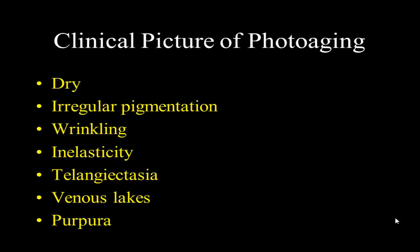Photoaging has a clinical correlate. The skin tends to dry out. They have irregular pigmentation, wrinkling, inelasticity, broken blood vessels, telangiectasias, venous lakes, and purpura. So they talk about the look of aging, but a lot of the look of aging is actually the look of photoaging. Most of these changes are really related to chronic sun exposure and not just to someone being 80 years old.